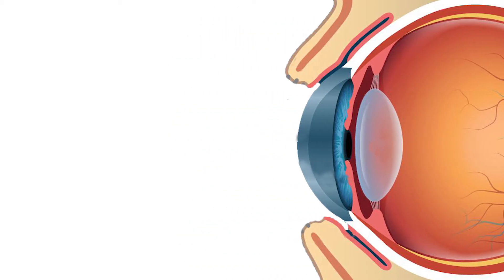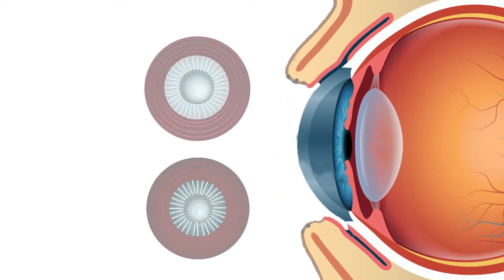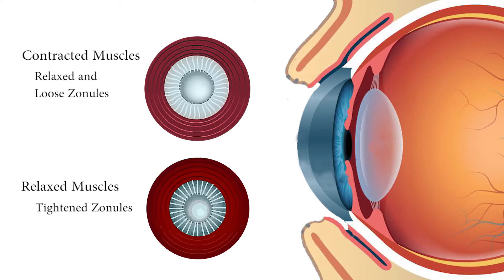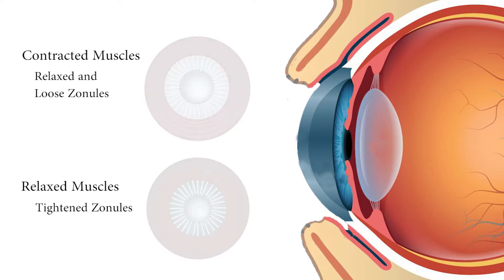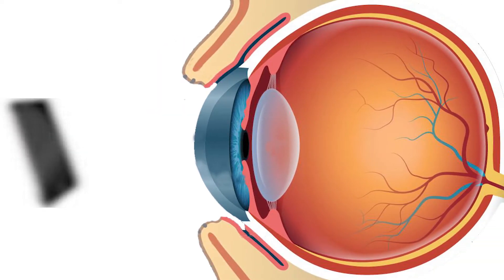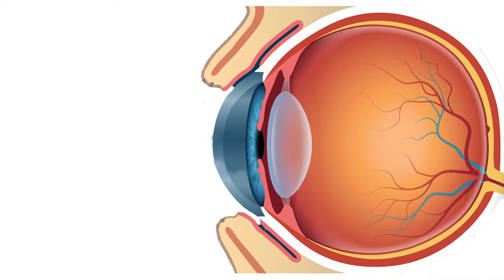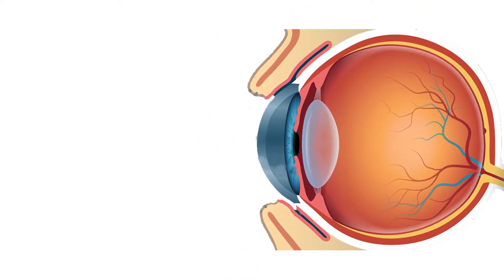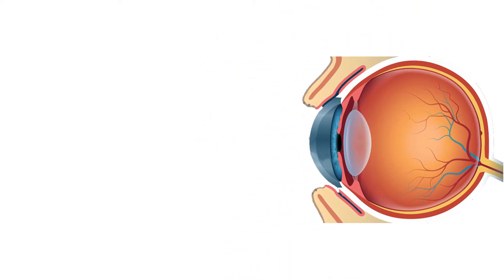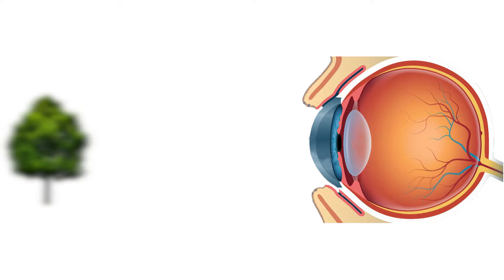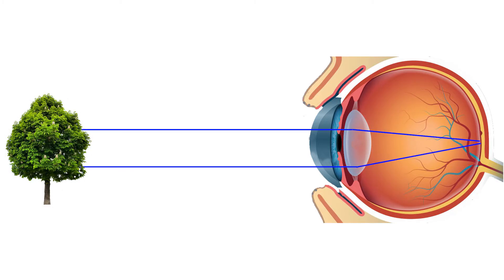When ciliary muscles contract, the zonules loosen, creating a rounder shaped lens and a higher refractive power, which enables us to see at shorter focal distances. When ciliary muscles relax, the zonules increase in tension, creating a flattening of the lens, thus an increase in further focal distances.